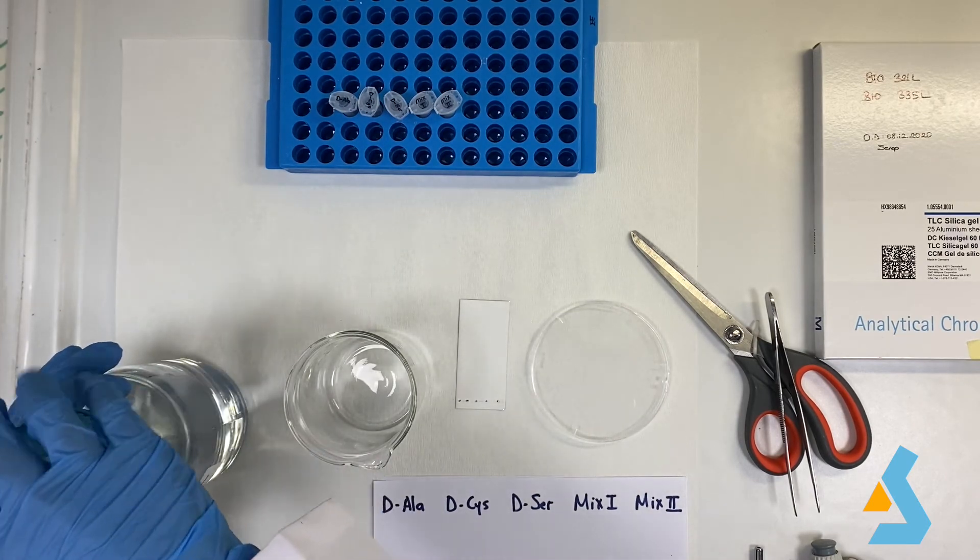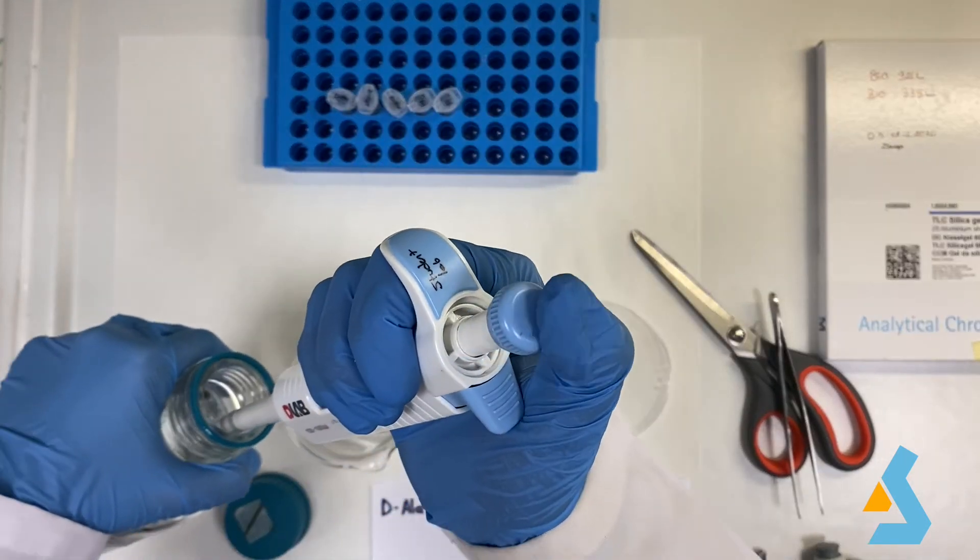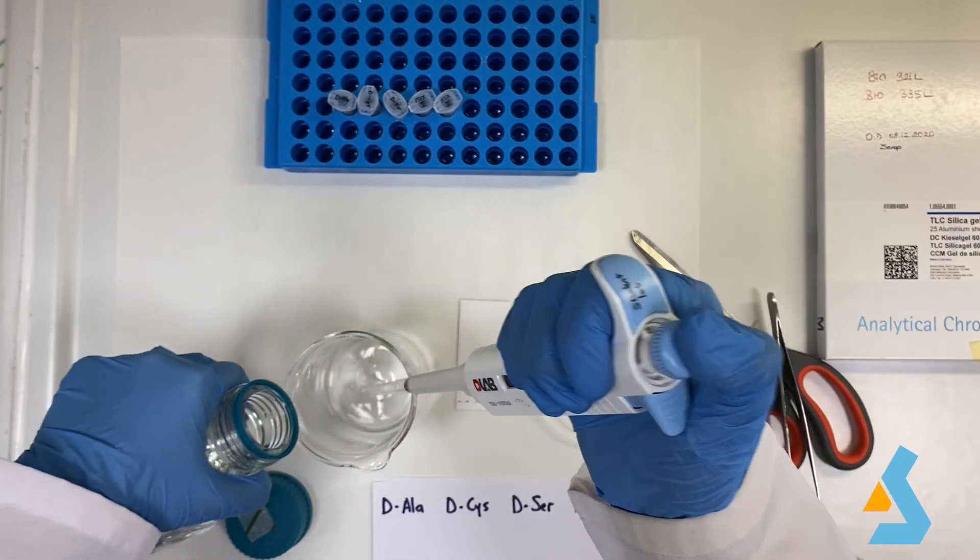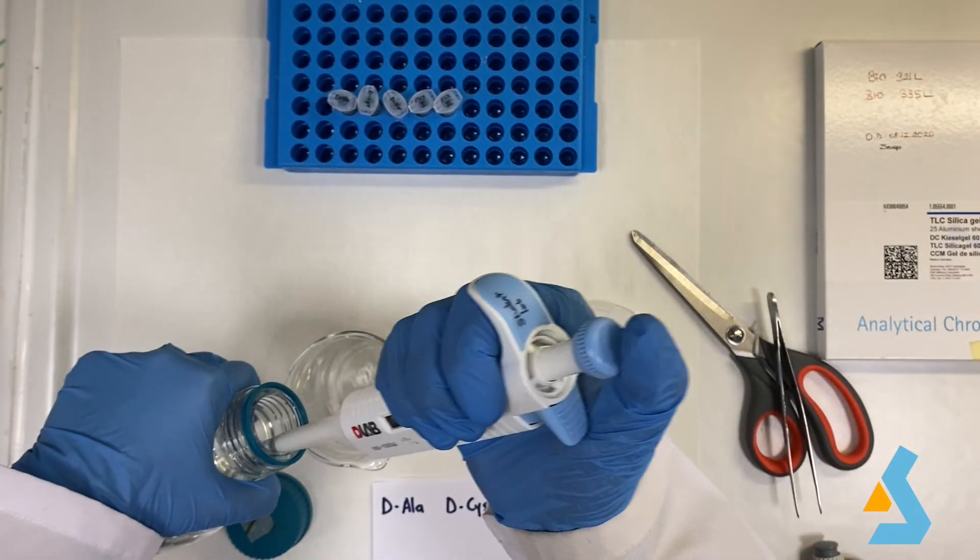We now add the solvent to the TLC chamber. The level of the solvent should be below the sample levels. Otherwise, sample may dissolve in the solvent.